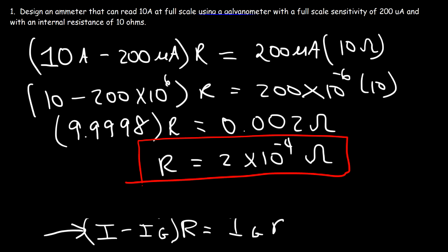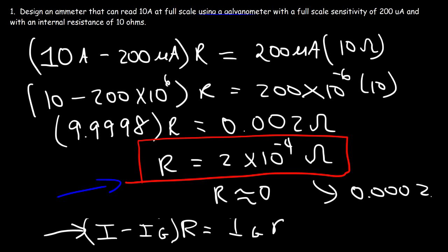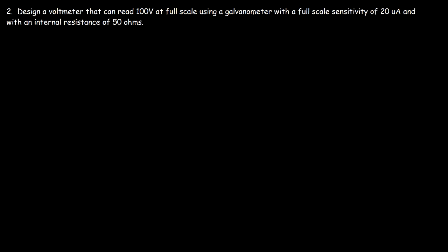So the shunt resistance needed in parallel with the galvanometer is about 2 × 10⁻⁴ ohms — that's 0.0002 Ω. As stated earlier, the resistance of an ammeter should be very close to zero, and this value is indeed very close to zero, confirming the shunt resistance must be very very low for this to work.